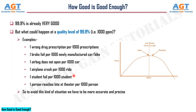Moving forward with the main question: how good is good enough? 99.9% is already very good, but what could happen at a quality level of 99.9%, that is 1,000 parts per million? Examples: one wrong drug prescription per 1,000 prescriptions; one brake failure per 1,000 newly manufactured cars or bikes; one airbag does not open per 1,000 cars; one airplane crash per 1,000 rides; one student fail per 1,000 students. So to avoid this kind of situation, we have to be more accurate and precise.